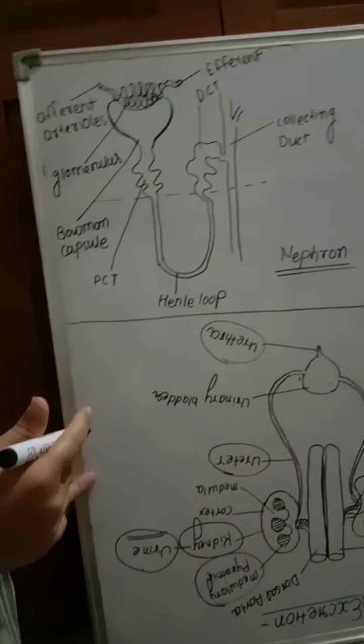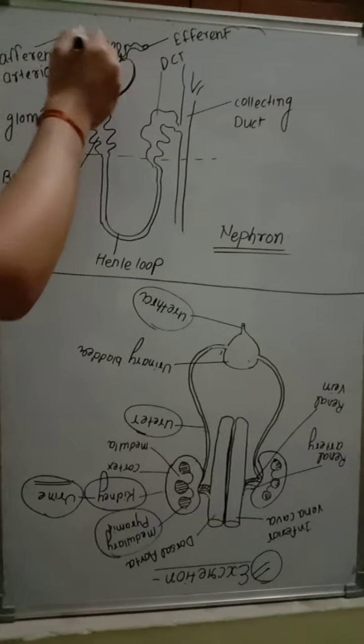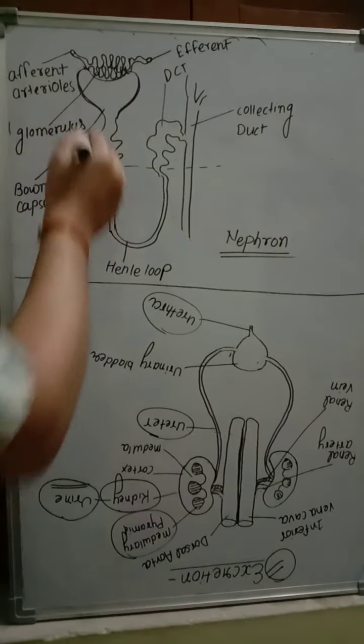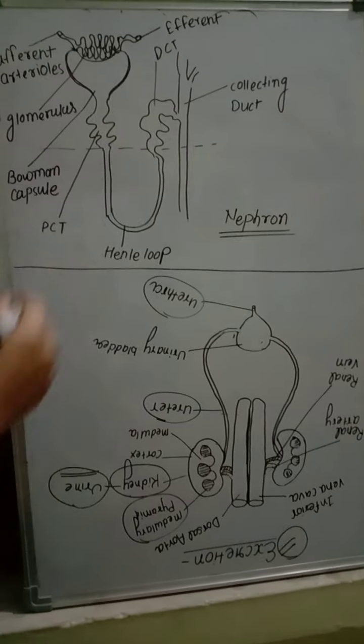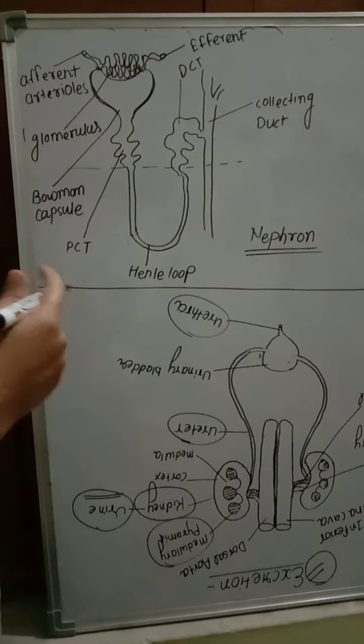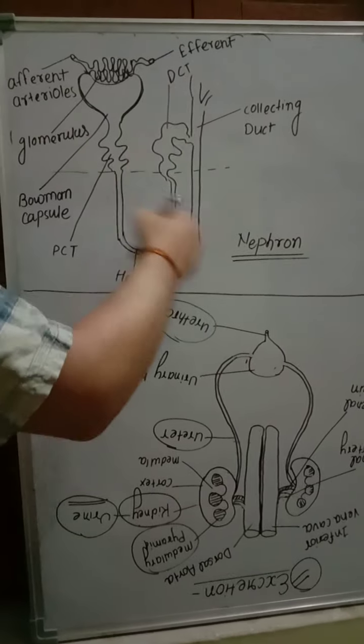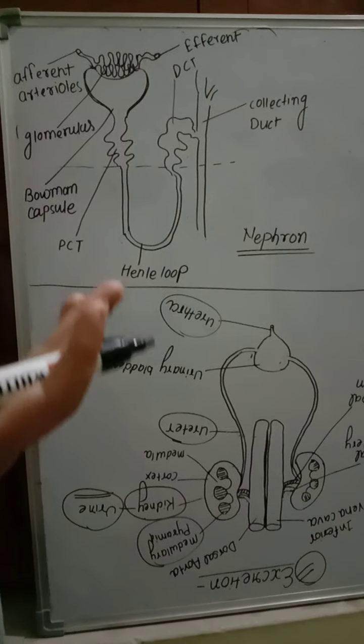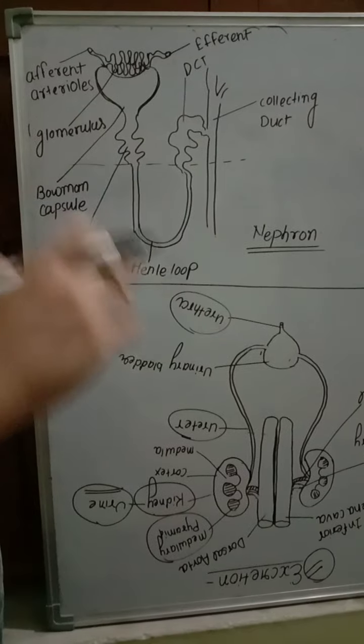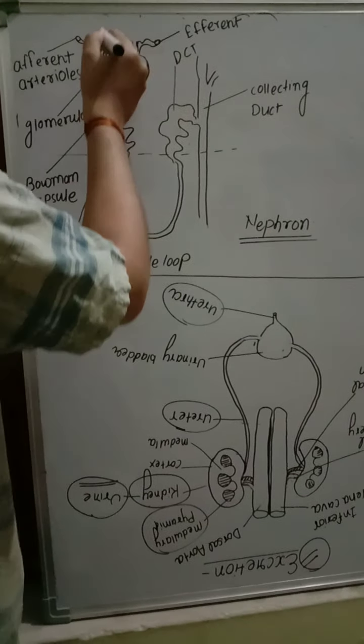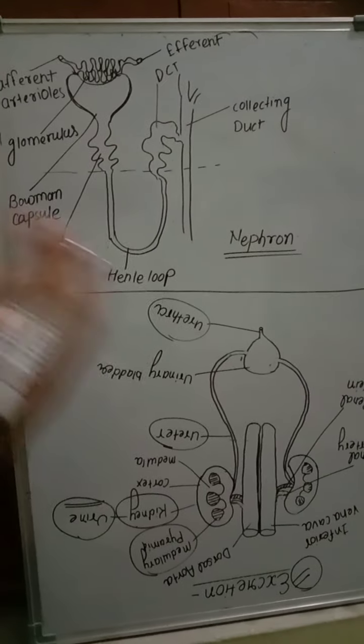Both of kidneys contain millions of nephrons. Nephron contains two portions: this portion is Bowman capsule and glomerulus, and another portion is called renal tubules. Renal tubules contain PCT, DCT, Henle loops. How in the nephron is our blood filtered? Because blood is the only medium which helps transport substances, secretory products are present in the blood. How is blood filtered? How in the blood are nitrogenous wastes removed?